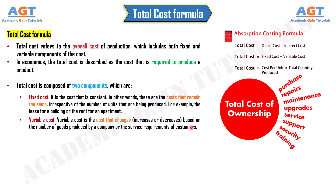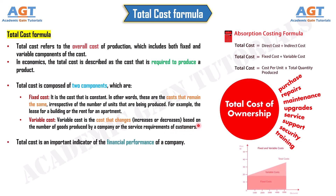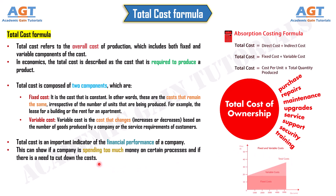Total cost is an important indicator of the financial performance of a company. This can show if a company is spending too much money on certain processes and if there is a need to cut down the costs.